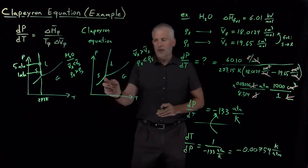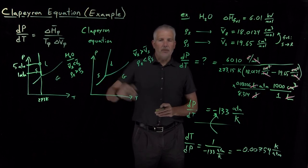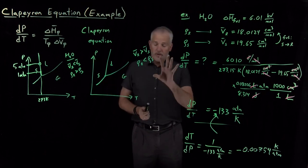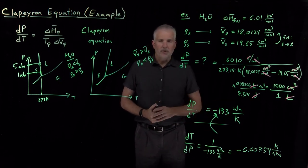If it weren't water, but some other substance, I could increase the melting point of that substance by exerting higher pressures on it. Those give you some examples of how to use the Clapeyron equation, as well as the significance of the results we achieve by using it.